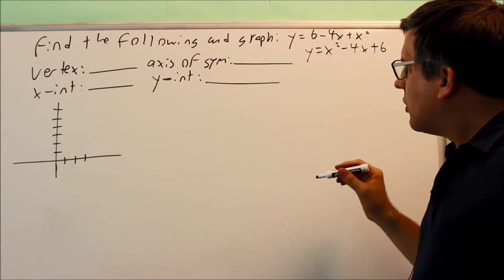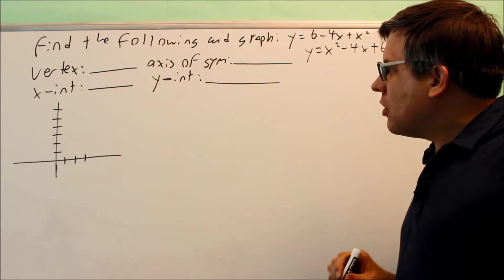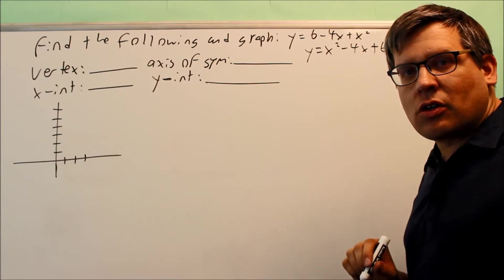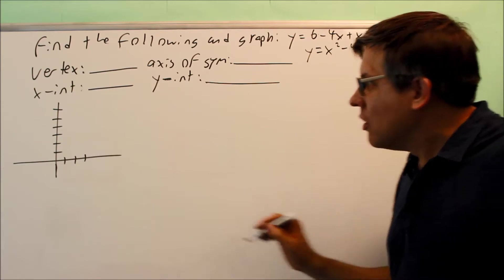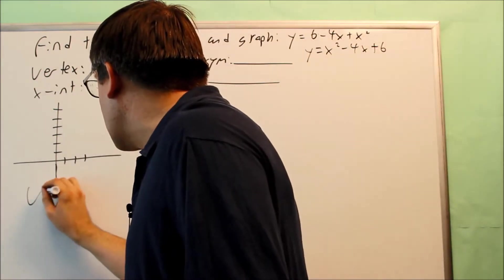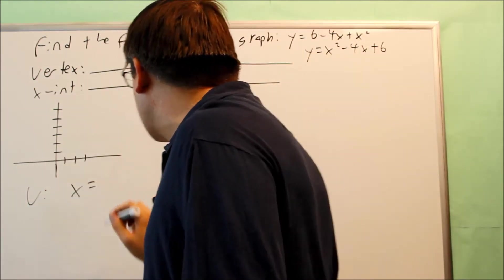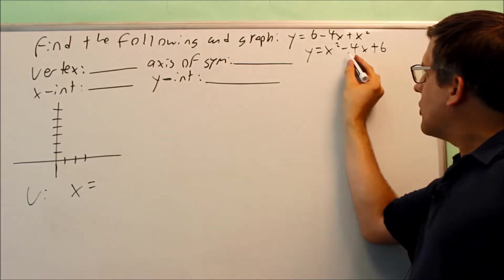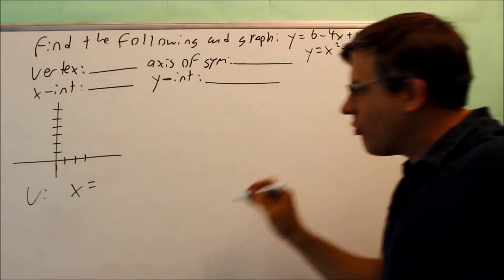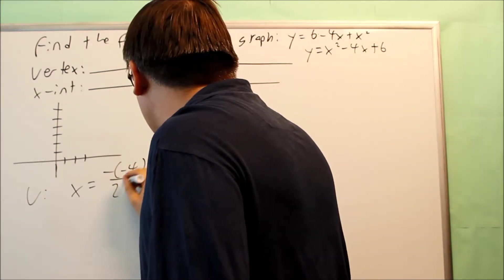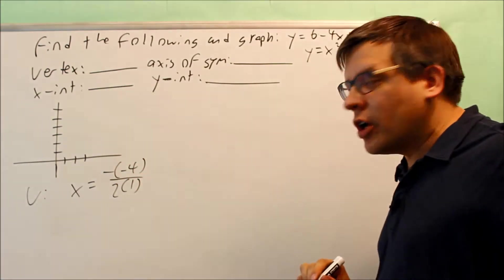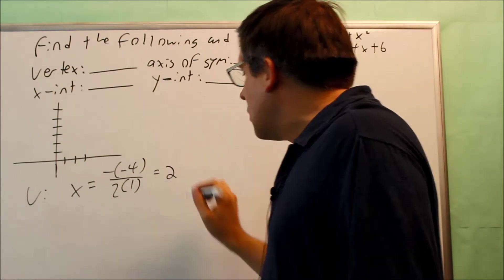So now that we know that, the first thing we need to find is going to be the vertex. For your vertex, you're going to use negative b over 2a. That's why it's important to have this written in the proper form. So in this case, the b is negative 4. So we do negative times negative 4 over 2 times a, in this case 2 times 1. And that gives us just 2.